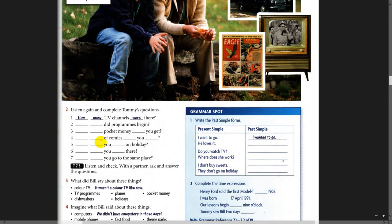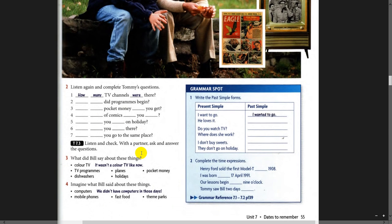Inshallah I will ask you these questions and we'll try to find similar sentences. Now if you look here, present simple and past simple: present simple is 'I want to go,' past simple is 'I wanted to go.' 'He loves it' becomes 'he loved it.' 'Can I watch?' 'Where does she work?' 'I don't buy sweets' becomes 'I didn't buy sweets.'